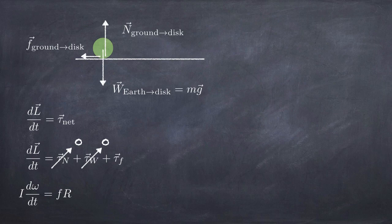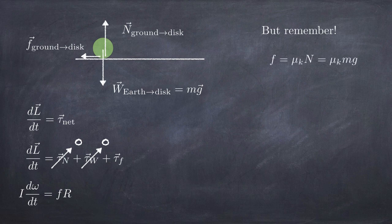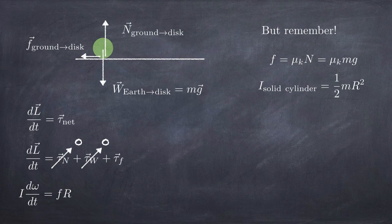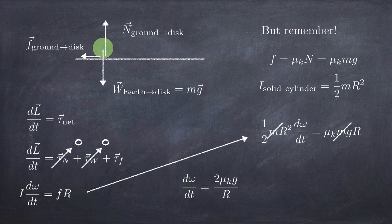The frictional force does produce a torque equal to the magnitude of the frictional force times the radius of the disc. The angular velocity points into the board and the torque also points into the board. In terms of magnitudes, the torque equals friction force times radius r, and the rate of change of angular momentum equals moment of inertia times the rate of change of angular velocity. For a solid disc, the moment of inertia is one-half m r². If it were a sphere or hollow cylinder, you'd use a different value.